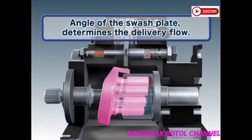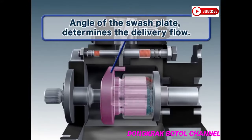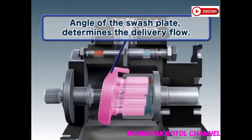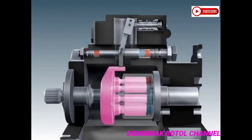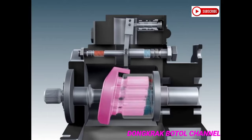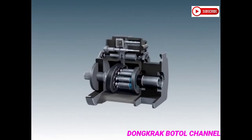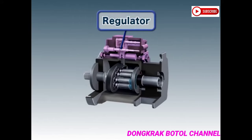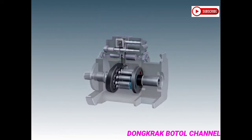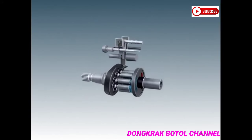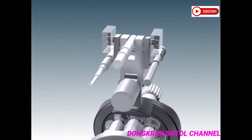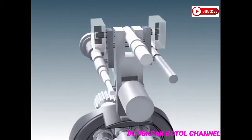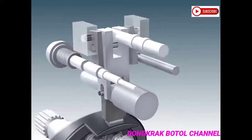The delivery flow can be adjusted by altering the inclination of the swash plate. The delivery flow is controlled by the regulator. The regulator controls the pump output to correspond with the engine output by adjusting the delivery flow.